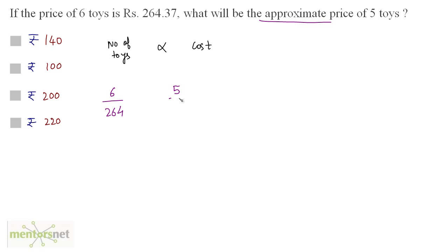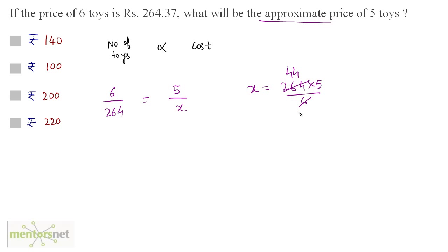The other ratio is we have five toys and let the cost of those five toys be x. This is in direct proportion, so I can directly equate them. So x is equal to 264 times 5 by 6. Since 6 times 44 is 264, and 44 times 5 is 220, the approximate cost associated with five toys is 220 rupees. So option D is the correct answer.